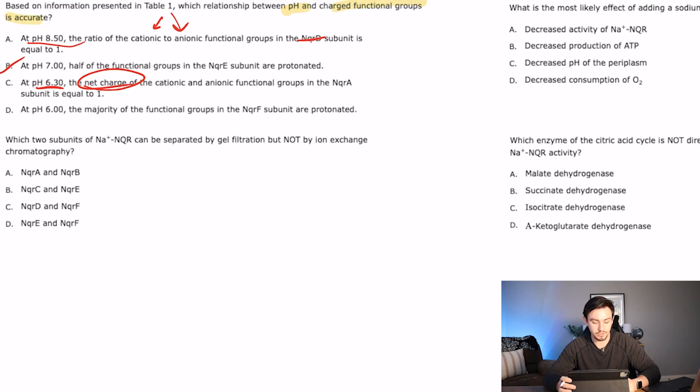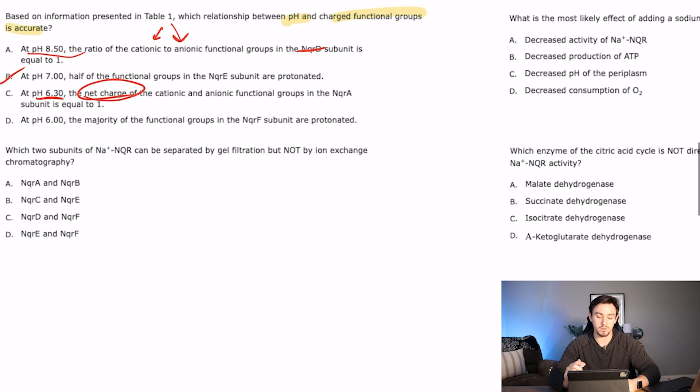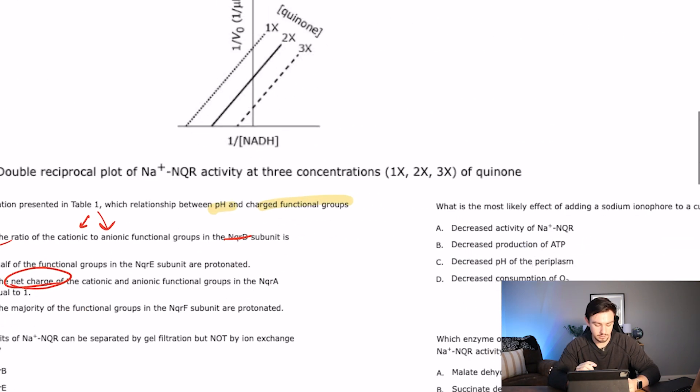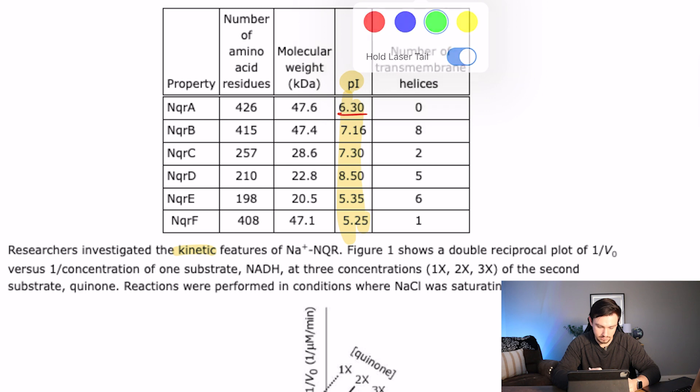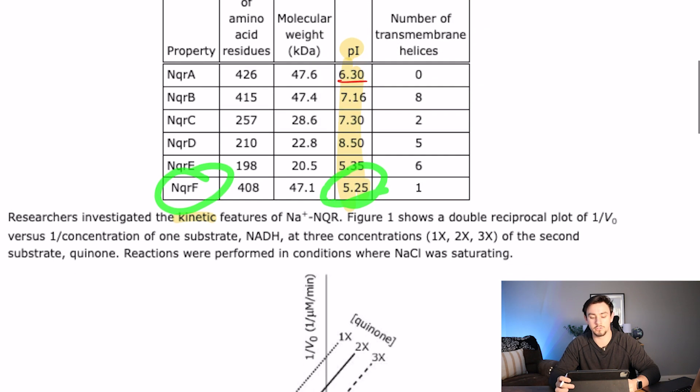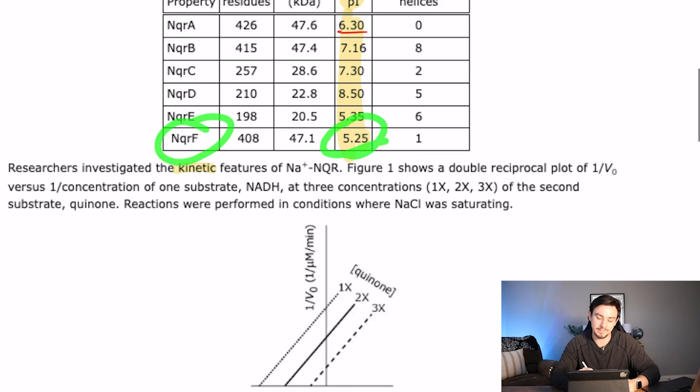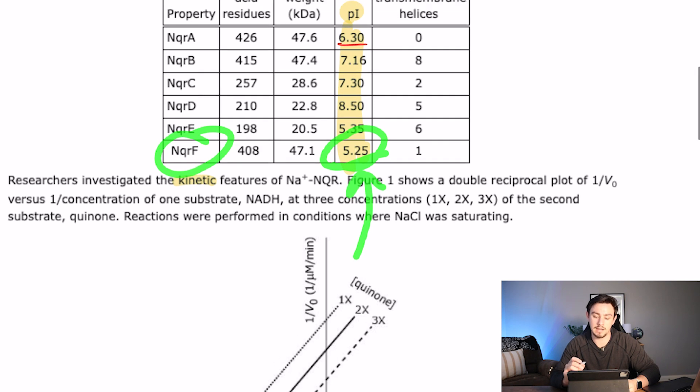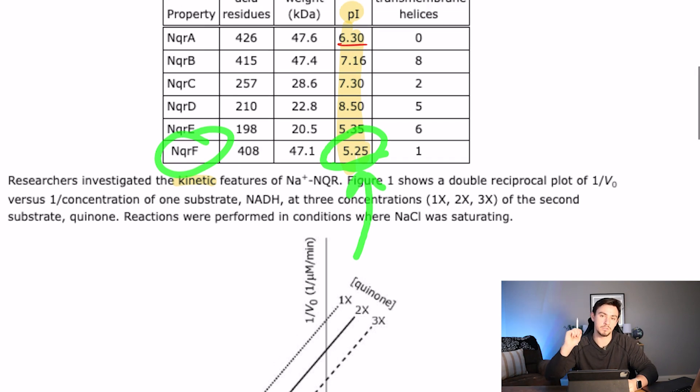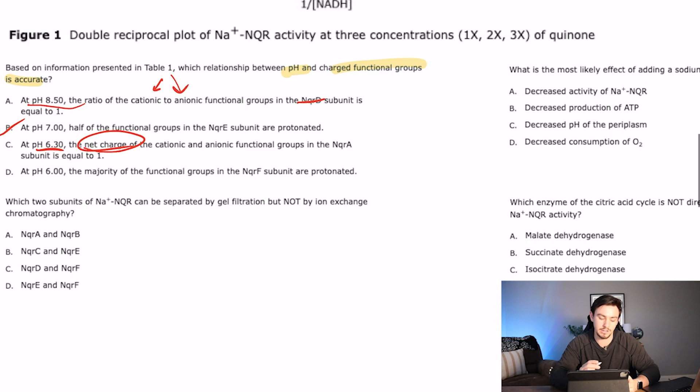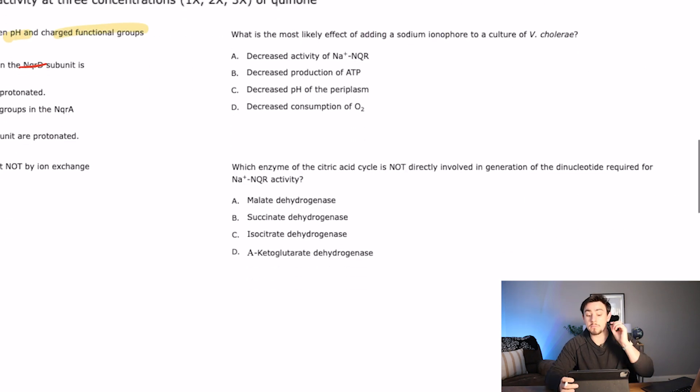But the majority of the charges would be positive above 7. So this one's incorrect because they're focusing on net charge rather than a ratio. And then D says at pH of 6, the majority of the functional groups in NQRF are protonated. So that's F. So F is here. And so at pH 6, the majority are protonated. Our PI is under this. Remember PI, if we're going above it, then we're removing a proton. So the majority are actually deprotonated. So the correct answer here is A.